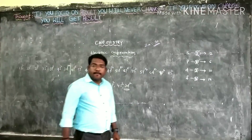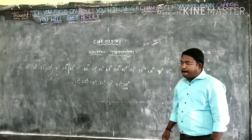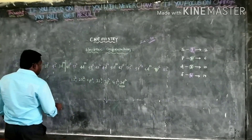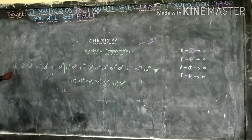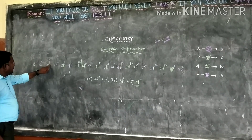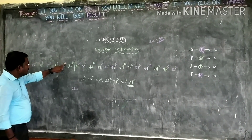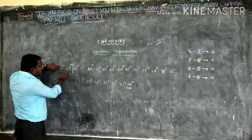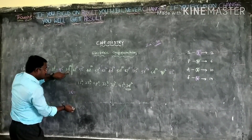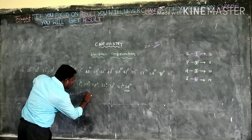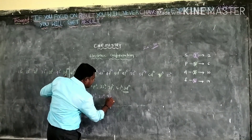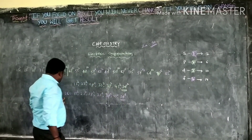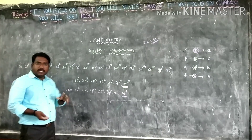One more we will try. Iron — atomic number 26. You start from here: two plus two is four, plus six is ten, plus two is twelve, plus six is eighteen, plus two is twenty. How many electrons are required to reach 26? Six. So six electrons we take from 3D. The electron configuration of iron is 1s2, 2s2, 2p6, 3s2, 3p6, 4s2, 3d6. That is the electron configuration of iron. Thank you.